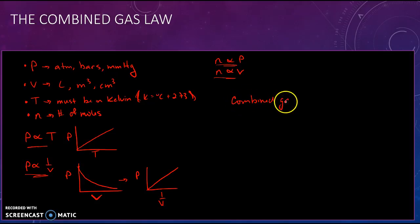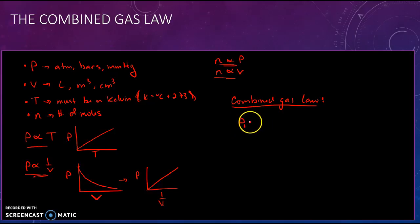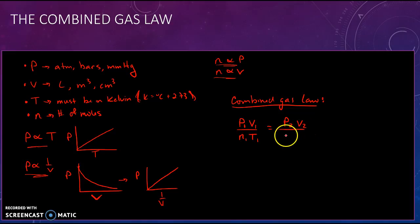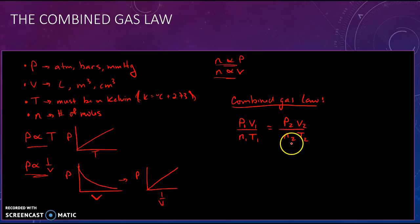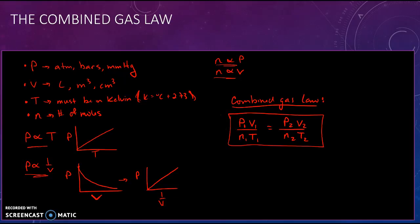The combined gas law pulls together Boyle's Law, Charles' Law, Avogadro's Law, and all those laws. What it says is that these ratios have to be constant: the pressure of a gas times the volume of a gas, divided by the number of moles times the temperature, must equal a constant. So if you change the state — say you increase the volume, change the pressure, let some moles out, or change the temperature — the combined gas law holds.